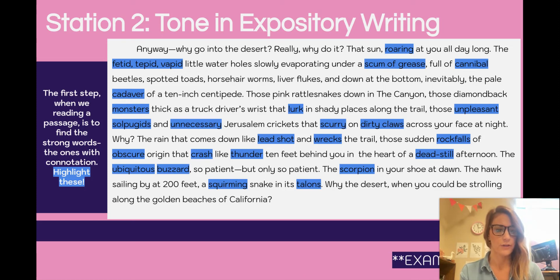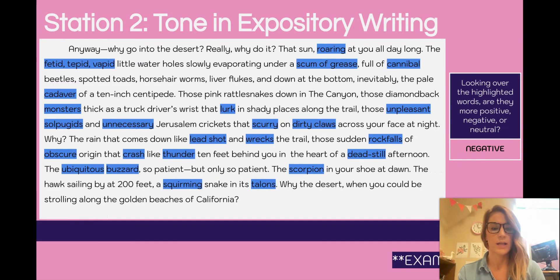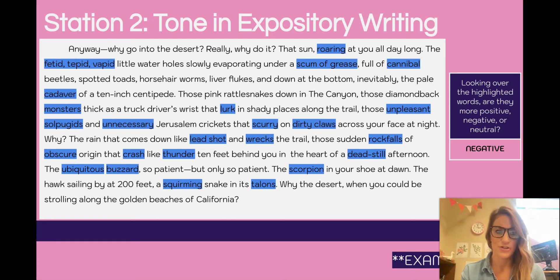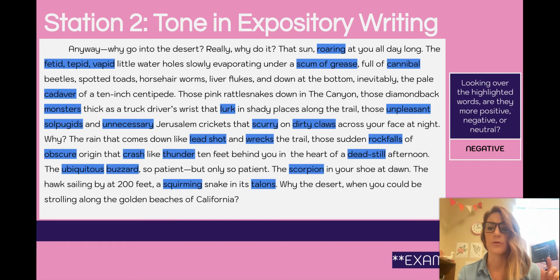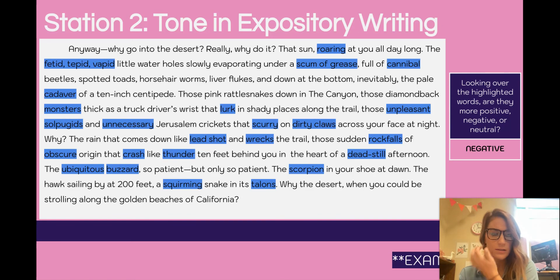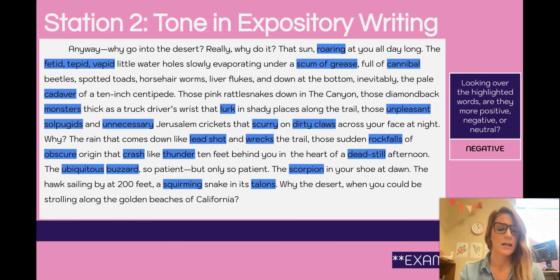The first step is to figure out the words that are strong. Next, I want to figure out: do these words feel more positive, negative, or neutral? In this case, these are very, very negative words — roaring, fetid, tepid, vapid, scum, grease, cannibal, cadaver, monster, unnecessary, lurk, scurry, dirty claws, lead shot, dead still, crash, thunder, buzzard, obscure, squirming, talons. None of these words have a good feeling behind them, so they are all negative.